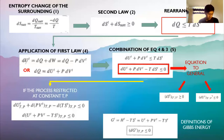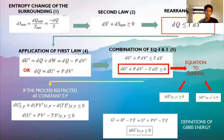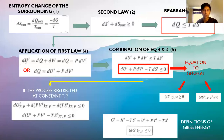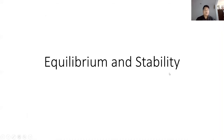Of the possible specializations of the general equation, this form is most useful because T and P, which are easily measured and controlled, are more logical constants than other variable pairs such as internal energy and specific volume. This equation indicates that all irreversible processes occurring at constant T and P proceed in such a direction as to cause a decrease in Gibbs energy of the system. Therefore the equilibrium state of a closed system is that state for which the total Gibbs energy is a minimum with respect to all possible changes at the given T and P.